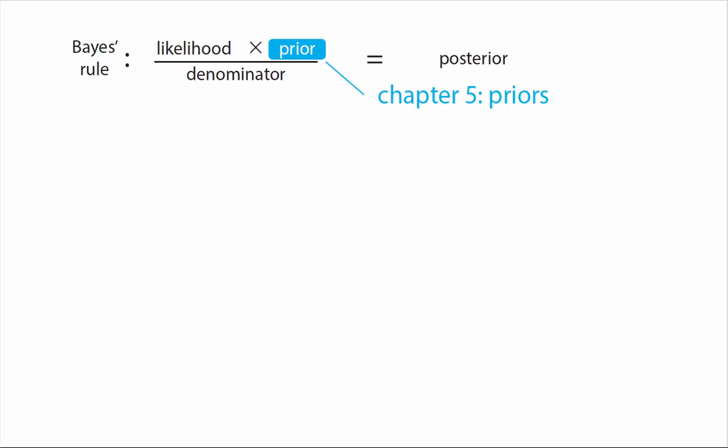The next chapter concerns the other element in the numerator of Bayes' rule: priors. This is without doubt the most controversial element of Bayesian inference, but I hope to convince you that most of this controversy is unwarranted.